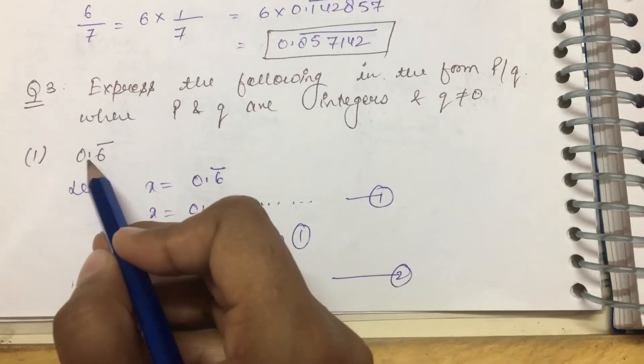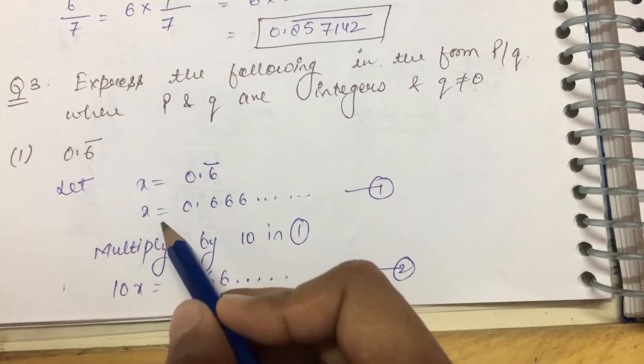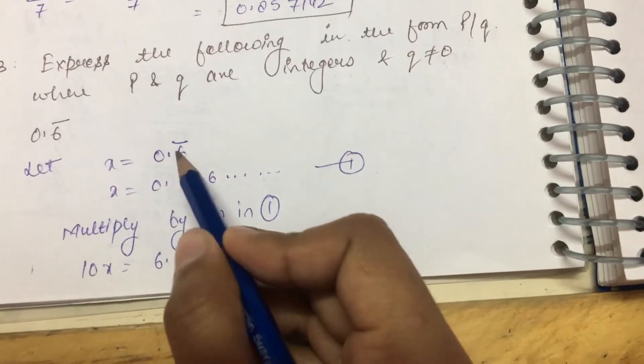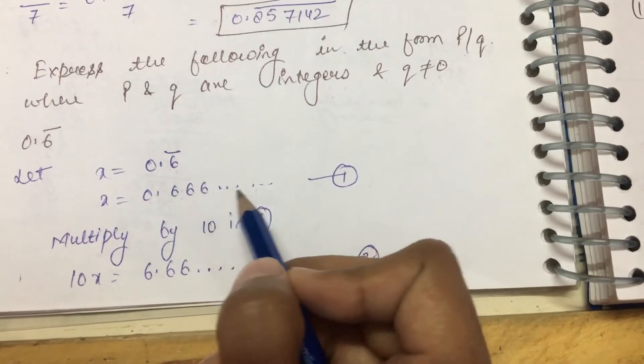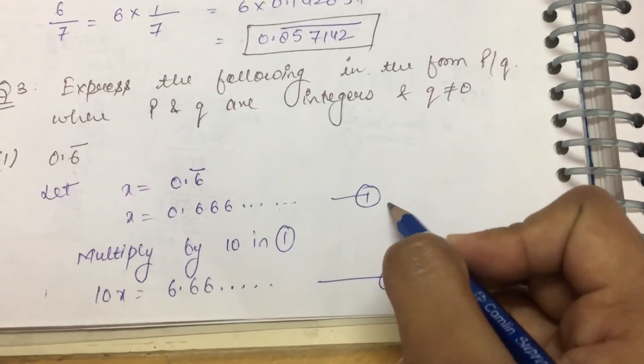To represent 0.6 bar in the form of p by q, first let this number equal x. 0.6 bar means 0.666 where 6 repeats and so on. This is equation number 1.